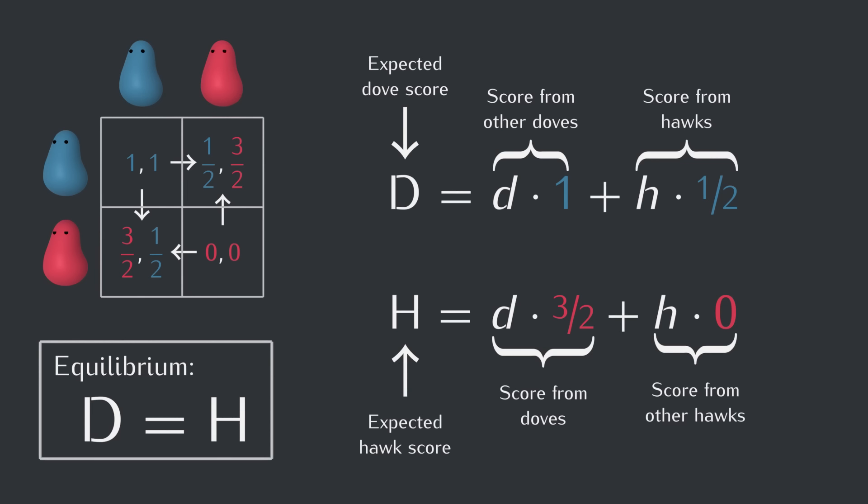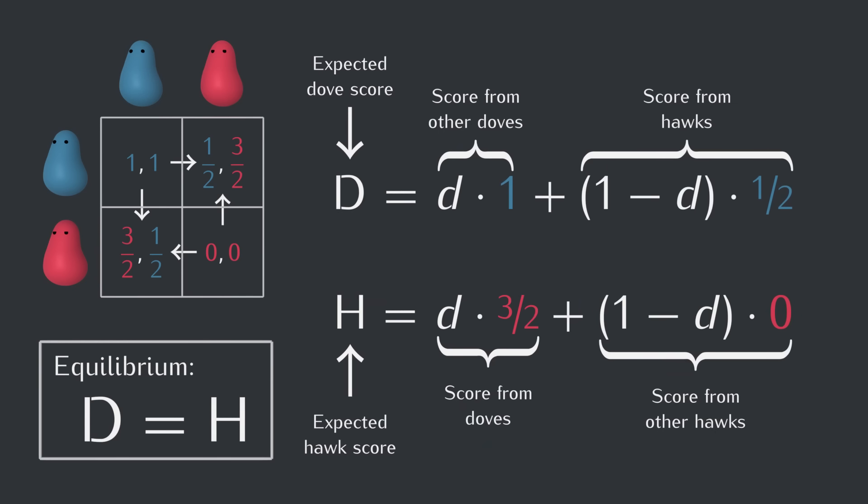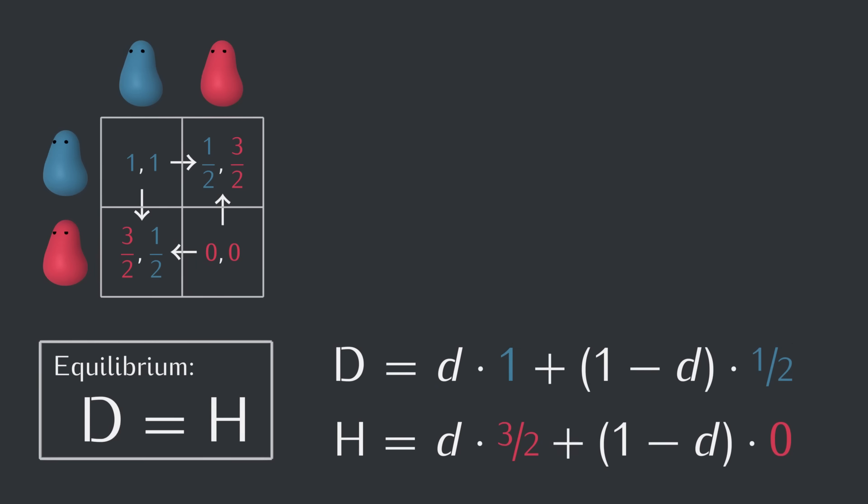Doves and hawks make up all the creatures, so their fractions have to add up to 1. And this means we can replace the small h with 1 minus small d. And now the expected dove and hawk scores are both written as functions of one variable, and the same variable, so we can graph them on top of each other.